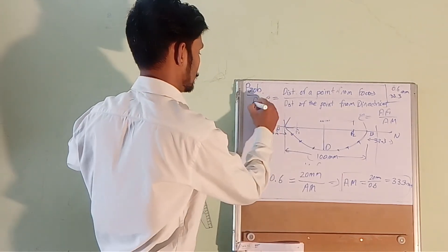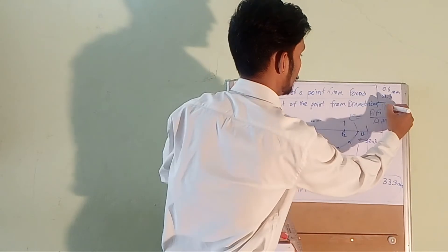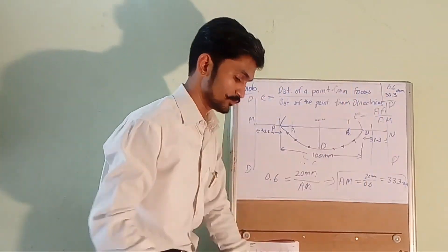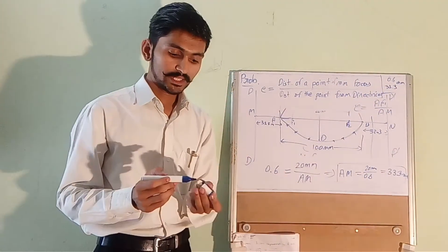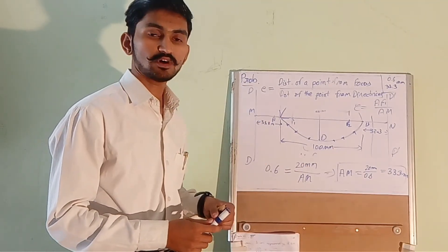And we will draw a directrix on both the points. So this is directrix DD and here will be directrix. So this is how we can calculate the eccentricity and we can draw the directrices of an ellipse.